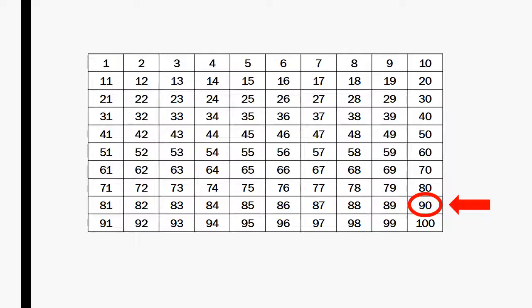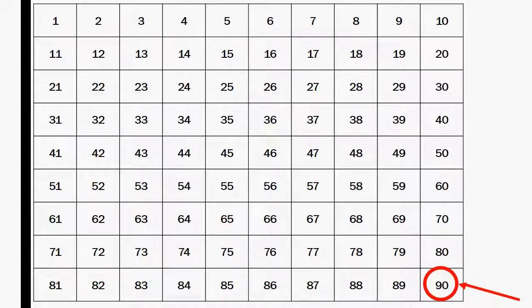Let's review the ways we counted to 90. The arrow points to the number 90 on the hundreds chart. This is the number 90 on a hundreds chart. This is the number 90. Please point to the number 90.